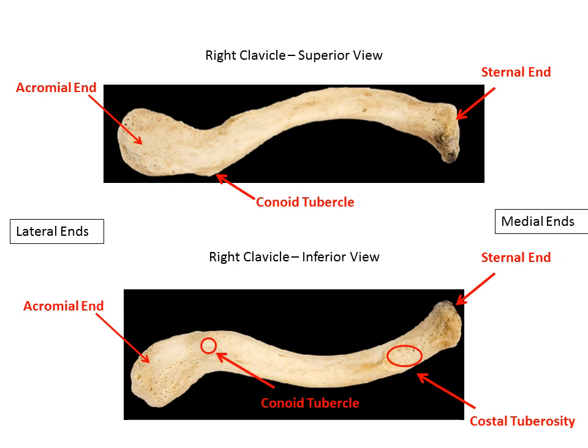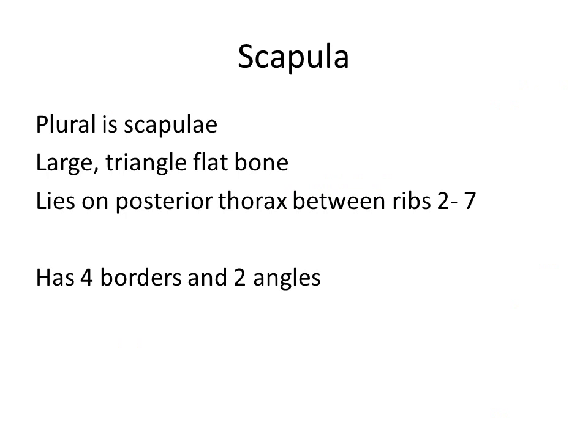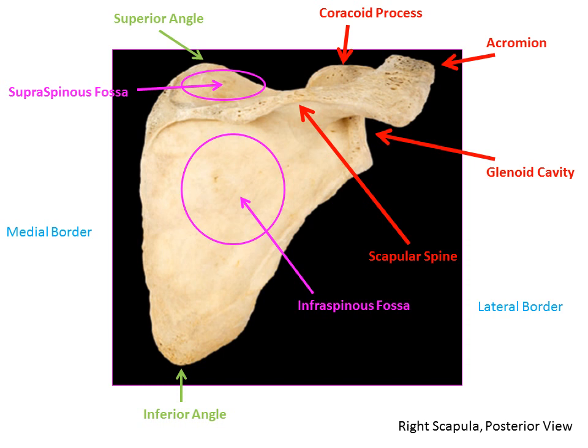On the bone models, the costal tuberosity will look like a roughened patch for the ligament to connect the clavicle to the first rib. The second piece of the shoulder girdle, the scapula, is called scapulae in the plural. This is a large triangular flat bone that lies on our posterior thorax specifically between ribs two to seven. The scapula has four borders and two angles.